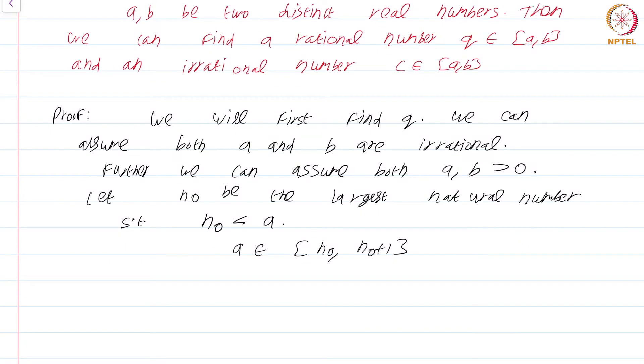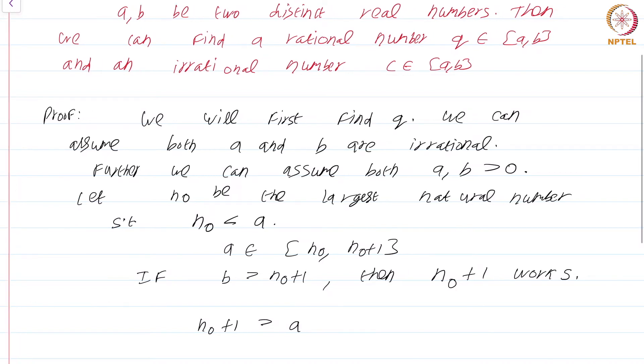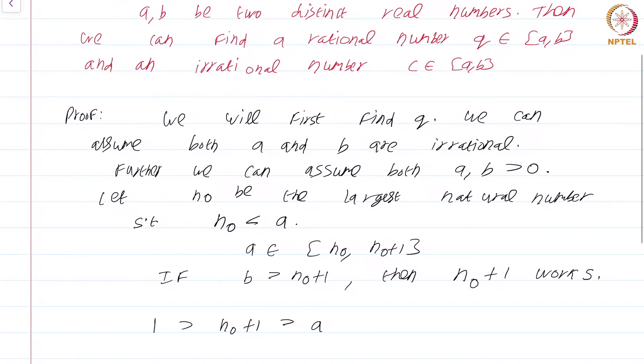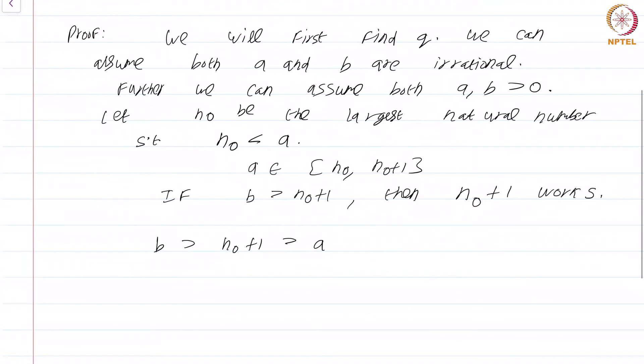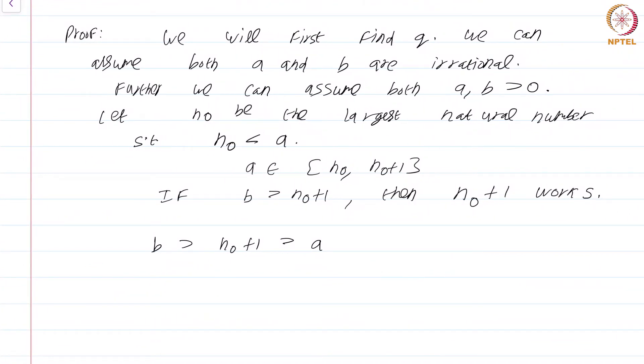There are two possibilities. If b is greater than n_0+1, then n_0+1 works, because n_0+1 is greater than or equal to a. In fact, it is greater than a because we already assumed that a is irrational, and it is less than b. So we have found a natural number that lies between a and b. So we are done.